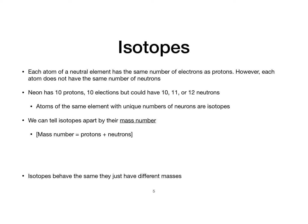All of these elements have the same number of protons as electrons. However, they don't all have the same number of neutrons. Neon, for example, is element 10, so it has 10 protons and 10 electrons — but it could have 10, 11, or 12 neutrons. These are isotopes. Isotopes mean that different atoms have slightly different weights based on how many neutrons they have.